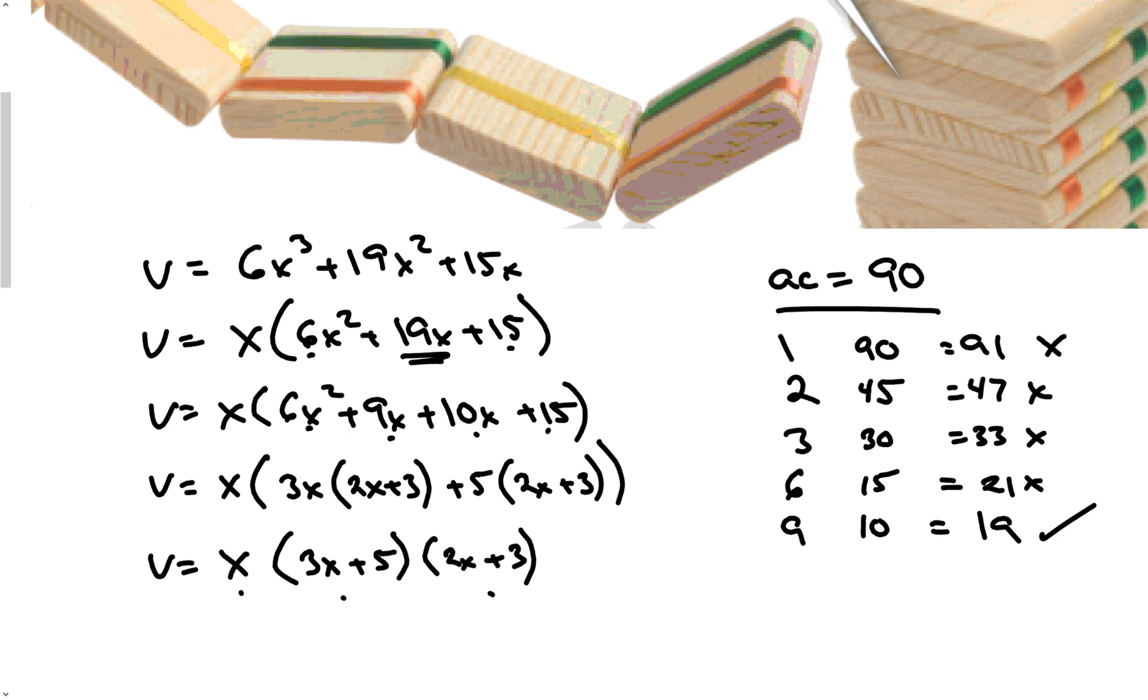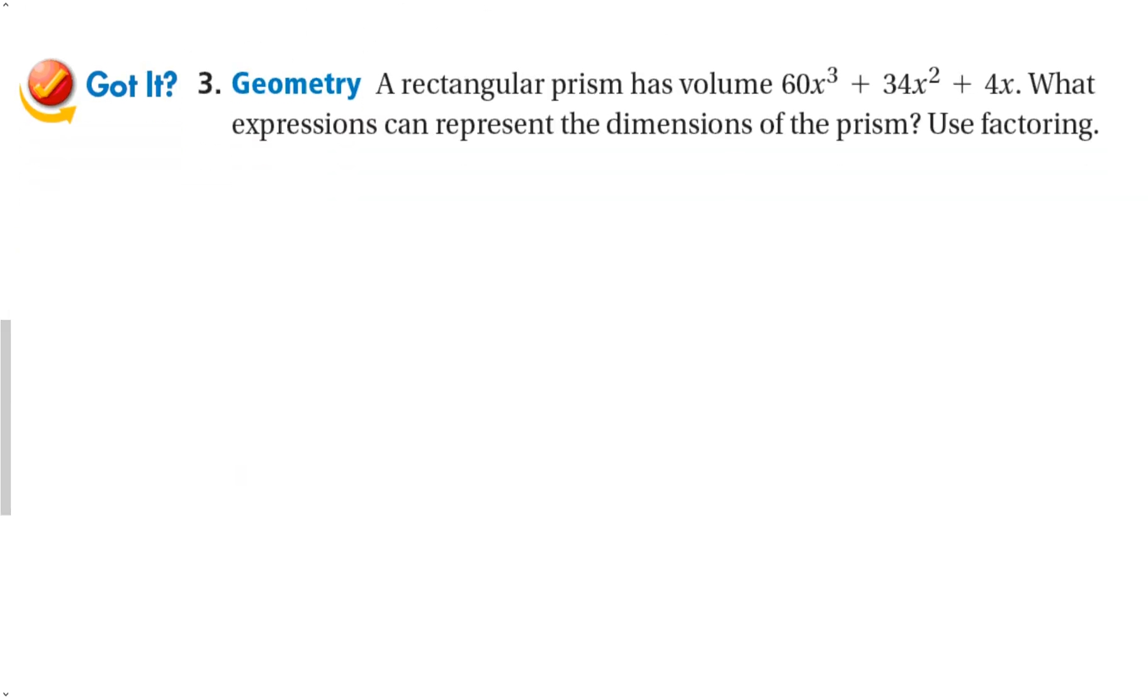Let's try that again. Rectangular prism has a volume of 60x to the third plus 34x plus 4. So let's write that down. 60x squared x to the third plus 34x squared plus 4x. Well unfortunately 4 doesn't go into 34 so I can't factor out a 4 but I can factor out a 2 and I can also factor out an x. Try to always factor as much as possible to get these numbers a little smaller. 34 divided by 2 is 17x plus 2.